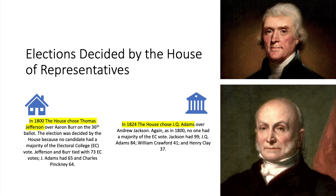There were just two elections in American history decided by the House of Representatives. In 1800, the House chose Thomas Jefferson over Aaron Burr after 36 attempts. The election went to the House because no candidate had a majority of electoral college votes — Jefferson and Burr tied with 73, John Adams had 65, and Charles Pinckney had 64.